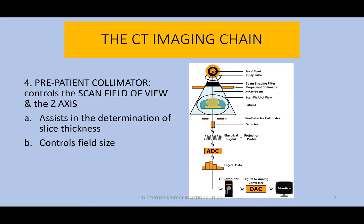That's what we're talking about with the pre-patient collimator — a pretty important piece of equipment. Because with it, we're going to limit the field being exposed to radiation. By doing that, we're going to limit the amount of scatter produced, and by doing that, we're going to severely limit the clouding over of details that occurs when scatter radiation impacts an image.